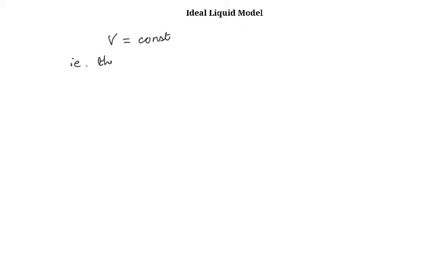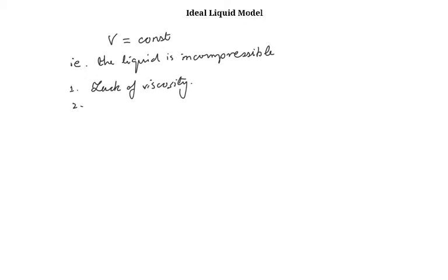Let's start with the ideal liquid model. The behavior of an ideal liquid is represented by an equation of state which is of a very simple form: V is equal to constant. That is, the liquid is incompressible. There are two additional hypotheses for this: one, lack of viscosity, and the second, constant specific heats.